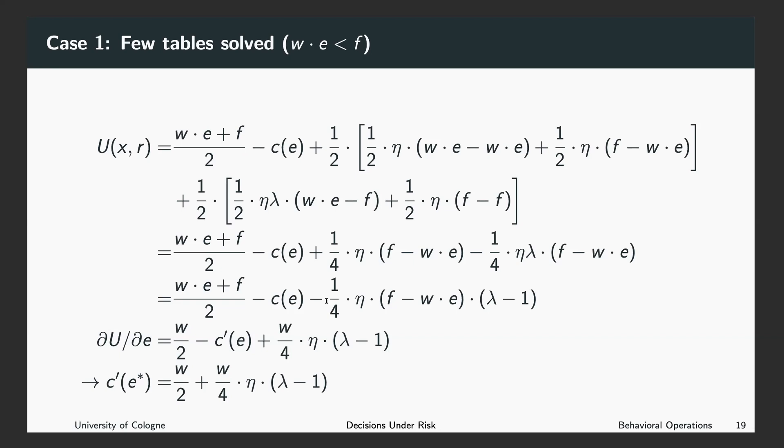Now we can further simplify this expression and we end up with this rather short expression for our utility. As you remember, we want to look for the optimal number of tables solved. So what we do is we derive the derivative of the utility with respect to the number of tables solved. And we end up with this term.